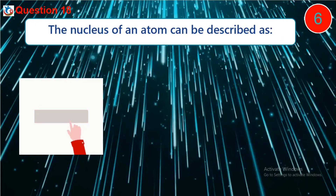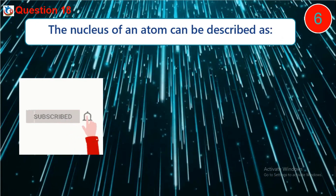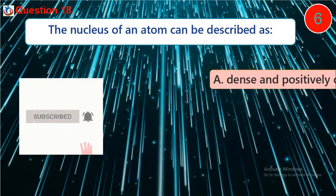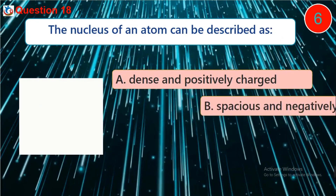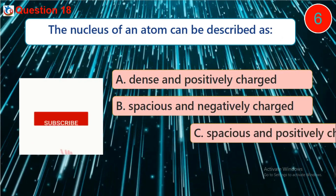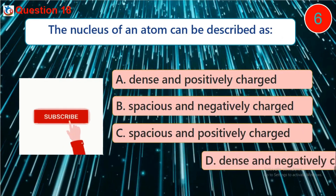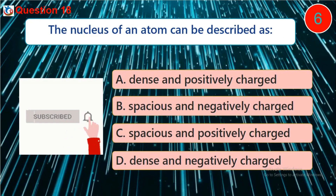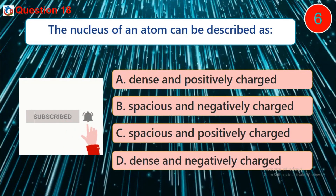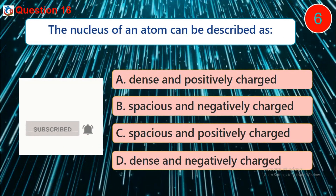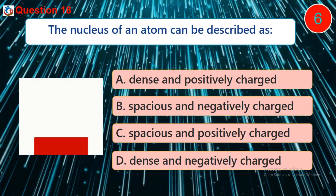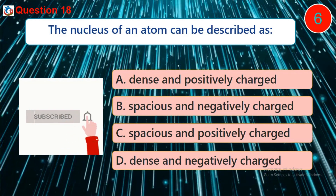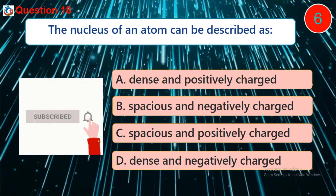Question 18. The nucleus of an atom can be described as: A. Dense and positively charged. B. Spacious and negatively charged. C. Spacious and positively charged. D. Dense and negatively charged.